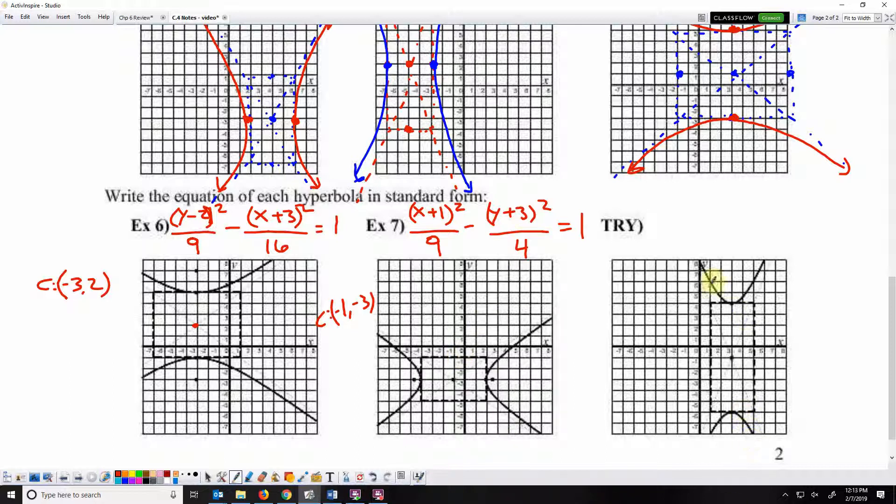And for my last equation, it's vertical again, so Y. The center of this hyperbola is 3, negative 1. So plus 1 squared over something minus X minus 3 squared over something.